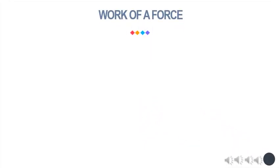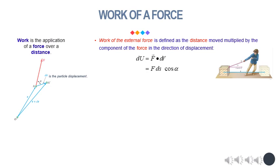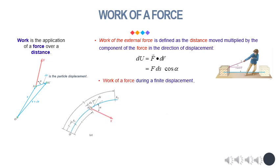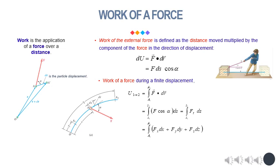In the first half of the chapter, we studied the method of work and energy and its applications to the analysis of the motion of particles. We first considered a force f acting on a particle A, and defined the work of f corresponding to the small displacement dr as the quantity dU equals f dot dr, or f multiplied by ds cos alpha, where alpha is the angle between f and dr. We obtain the work of f during a finite displacement from A1 to A2, denoted U1 to 2, by integrating along the path: U1 to 2 equals the integral from A1 to A2 of f dot dr. For a force defined by its rectangular components, U1 to 2 equals the integral from A1 to A2 of (Fx dx plus Fy dy plus Fz dz).